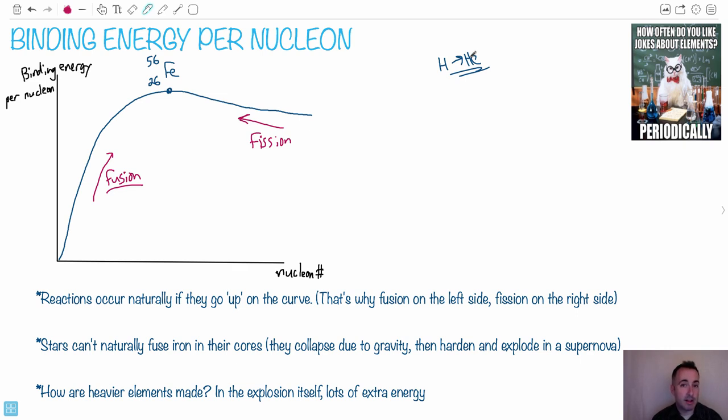You could say, well, a star can make all the way up until iron. But then after iron, when it blows up, only when it explodes in the supernova explosion is when it has enough energy to then make those. So we actually think that all the elements higher than iron were actually made in the supernova explosion itself from a star. It's kind of mind-blowing, isn't it?